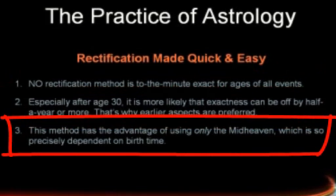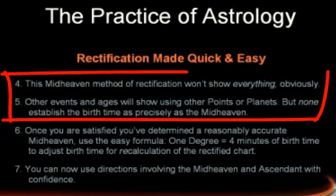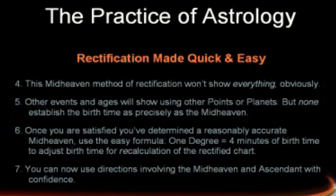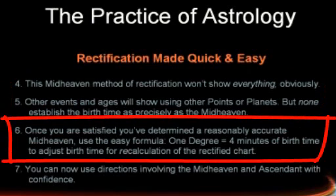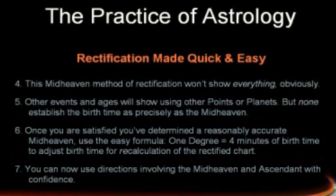This method has the advantage of using only the midheaven, which is very precisely dependent on birth time, and it will not show everything. Other events and ages will show using other points and planets, but none of them establish the birth time as precisely as the midheaven. Once you are satisfied that you've determined a reasonably accurate midheaven, use the formula one degree equals four minutes of birth time, and adjust the birth time for recalculation of the rectified chart. Then you can start using directions involving the midheaven and the ascendant with confidence.